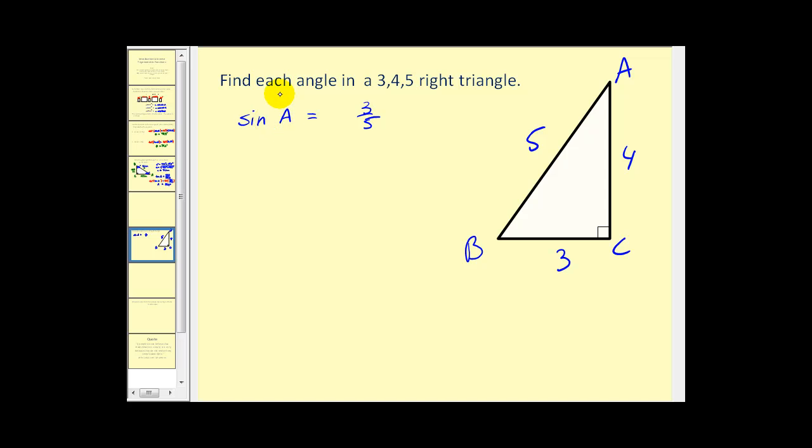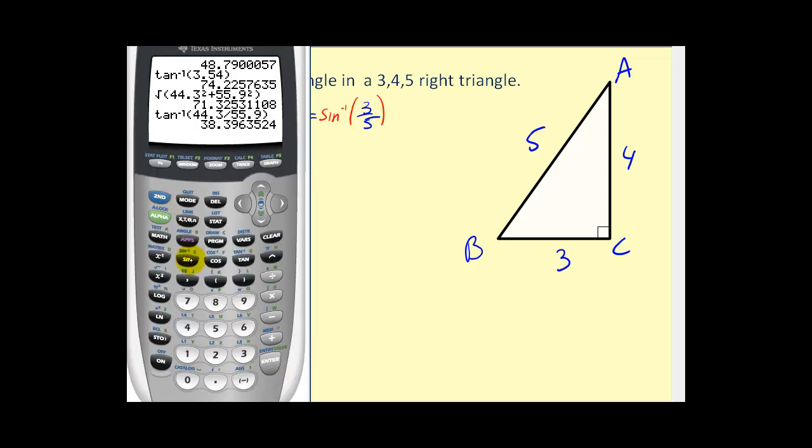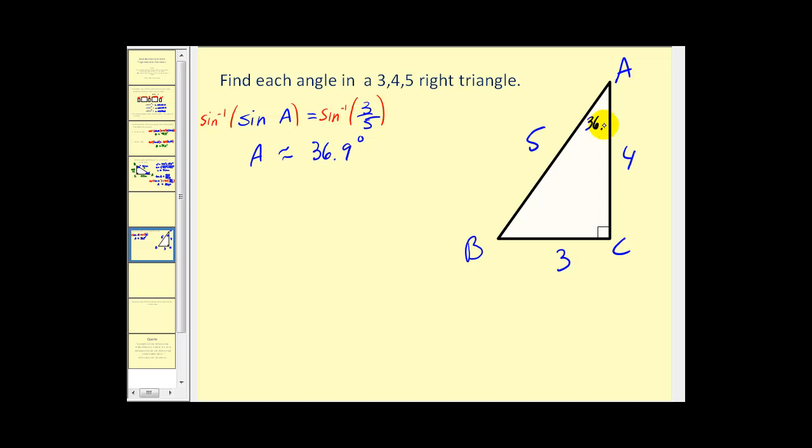So again, in order to find angle A, I can take the inverse sine of both sides. So the left side will have angle A. And the right side will go to our calculator. We want the inverse sine of 3 fifths. So second sine 3 fifths. Looks like it's roughly 36.9 degrees. And again, these two are complementary. So 90 minus 36.9 will give us 53.1 degrees for angle B.